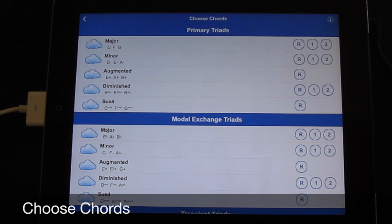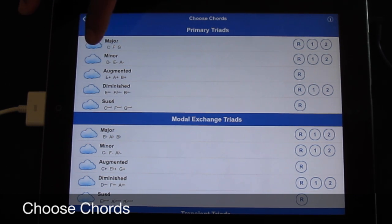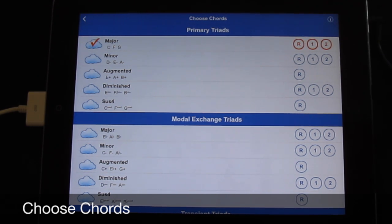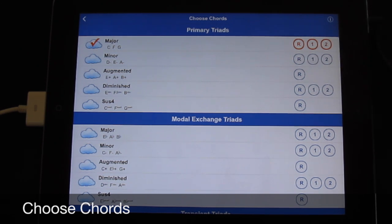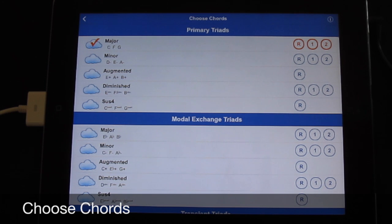So in this case, the C triad, the F triad, and the G triad establish the general foundation of the key center. So what I like to do to start is I would select the cloud. You touch the cloud over to the left, and you'll notice that the R, the 1, and the 2 to the right all light up. These are indicating that you now have C, F, and G triads in root position, first inversion, and in second inversion.